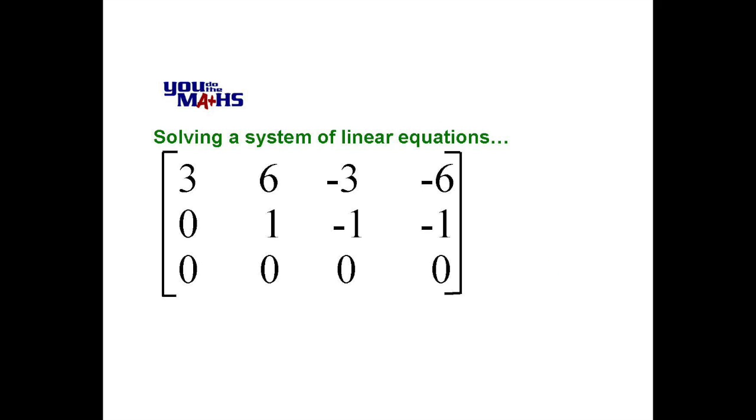Now we can see we have a zero in the second entry of row 3, but we also have zeros all the way across row 3. So that makes for an interesting question because what does that actually mean? In effect we've got an equation which says 0x plus 0y plus 0z equals 0, or in simpler terms 0 equals 0.